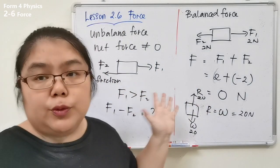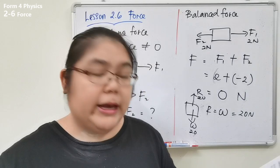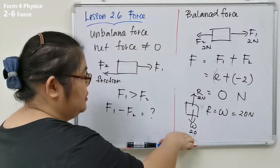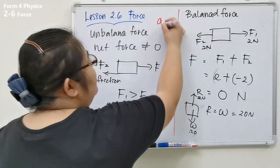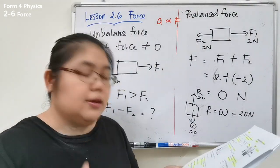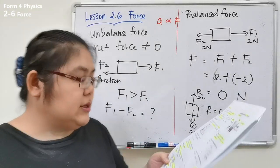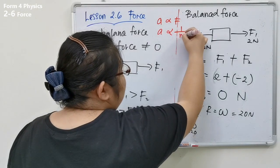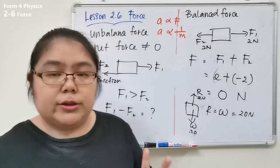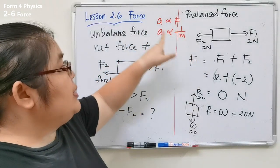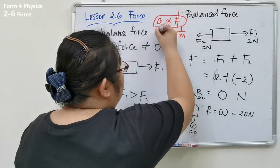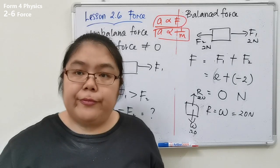Newton's Second Law is what we focus on today. The acceleration of a body is directly proportional to the net force acting on it, and inversely proportional to the mass. So: a ∝ F and a ∝ 1/m. These two relationships combine into the formula F = ma, which we will study in detail.